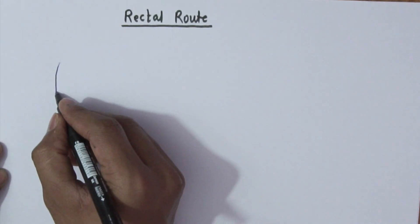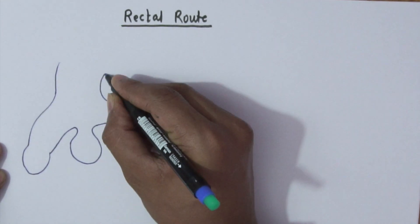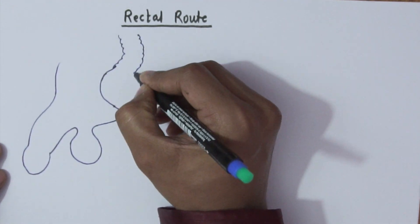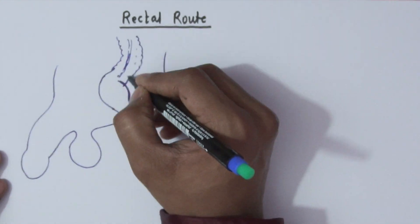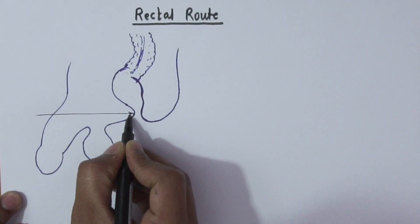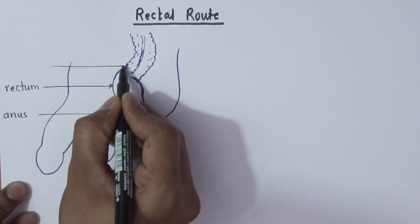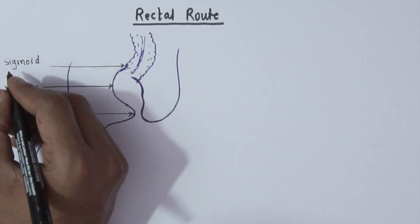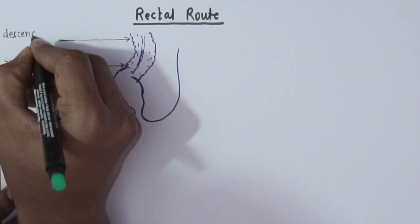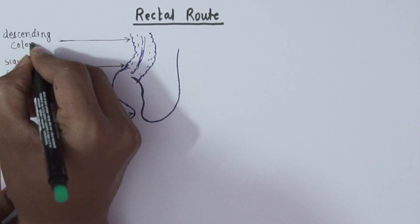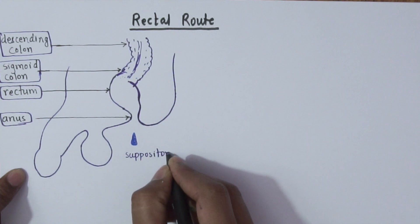Okay, so we will start with rectal route. I am drawing a systematic diagram of lower digestive tract to understand the rectal route. So this is the anus, this is the rectum, this is sigmoid colon, it is a part of colon, and this is descending colon. So these all things you already know.